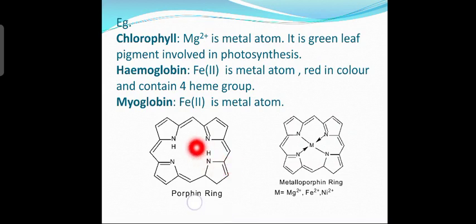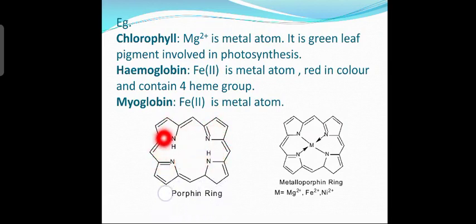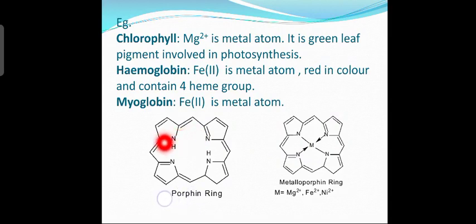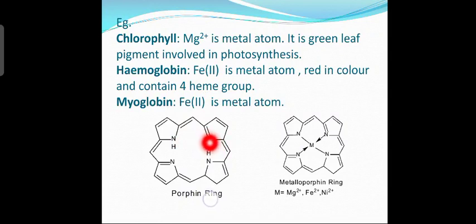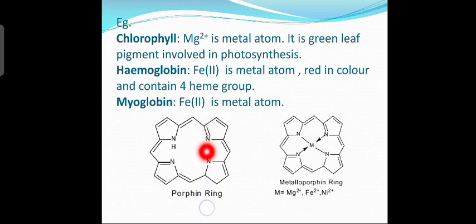In the porphyrin ring, there are four pyrrole rings, each containing one nitrogen atom. One type of nitrogen exists as NH — this is called secondary nitrogen. The other nitrogen without hydrogen, which is triply bonded to adjacent carbons, is called tertiary nitrogen. In two of the pyrrole rings, the nitrogen exists as NH (secondary), and in the other two, it is tertiary nitrogen N.